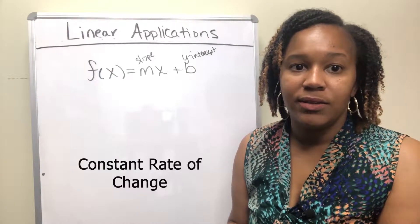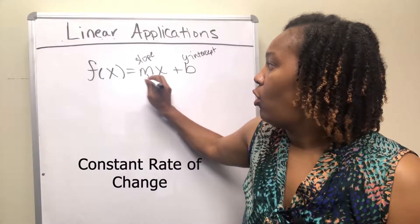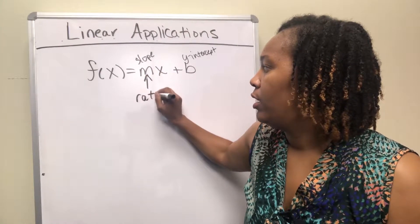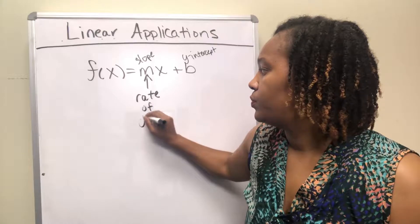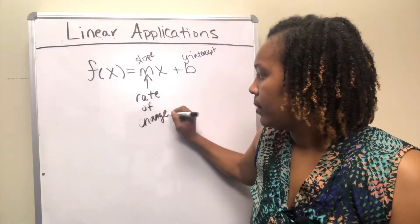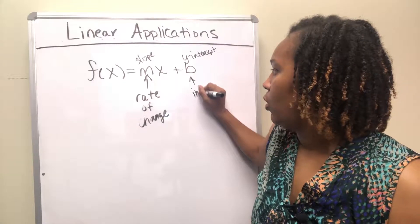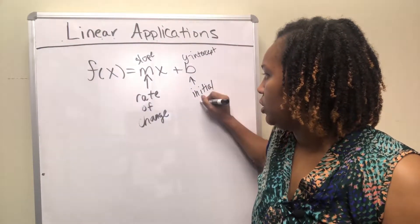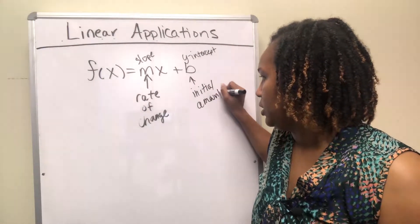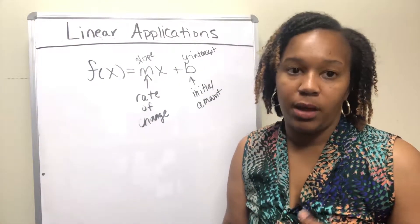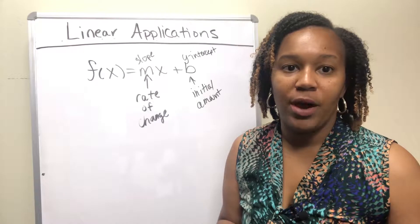So in the case of an application, the slope is the same as the average rate of change, and your y-intercept is your initial amount. These are the two things you need to know when dealing with linear applications. You need to know the rate of change and the initial amount, and that'll be your slope and your y-intercept.